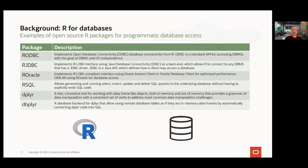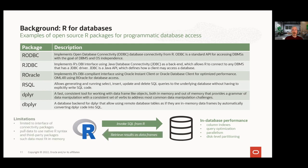RSQL generates and runs SQL queries to the underlying database without having to explicitly write SQL code. Then we have dplyr, part of the tidyverse, which provides a grammar of data manipulation with a consistent set of verbs to address common data manipulation requirements. This is complemented by dbplyr, a database back-end for dplyr, which allows treating remote database tables as if they were in-memory data frames by automatically converting dplyr code into SQL. Some of the benefits for in-database performance are the ability to take advantage of column indexes, query optimization, parallelism, and disk-level partitioning. However, users are limited to the interfaces provided by each connectivity package, and data must be pulled to the client to use native R syntax or third-party packages — and that data must fit in memory.